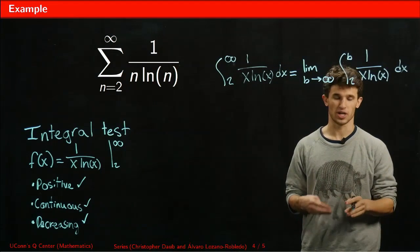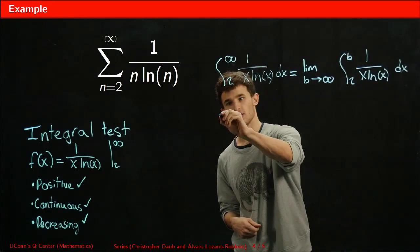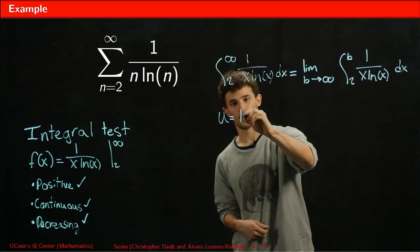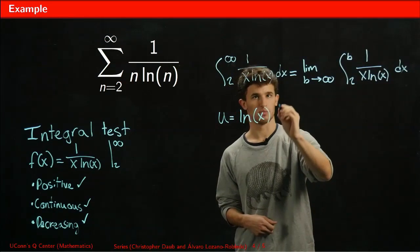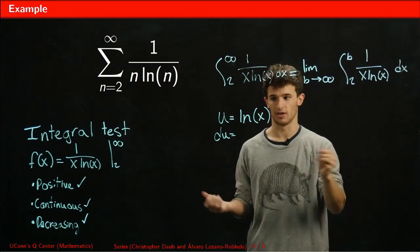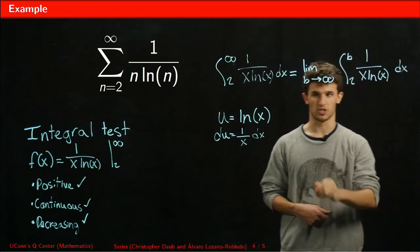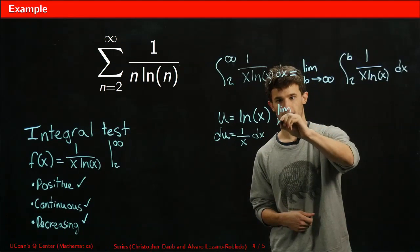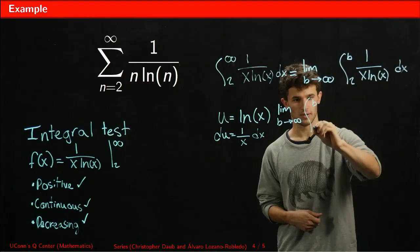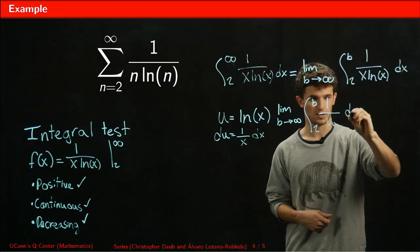We see that just doing a normal integral by power series or one of those easier tricks isn't going to work. We actually have to use u-substitution. Let u equal ln(x), which means that du equals 1 over x dx, because the derivative of ln(x) is 1 over x. Now performing our substitution, we get the limit as b goes to infinity of the integral from 2 to b of 1 over u du.